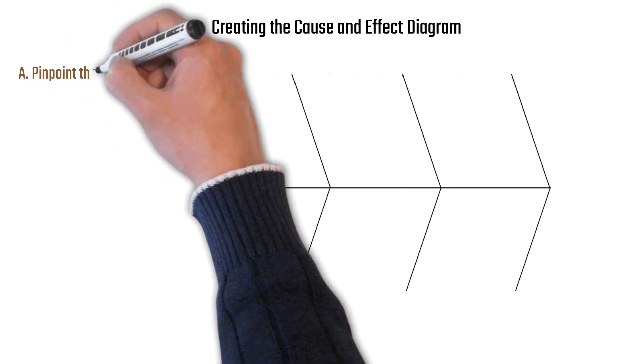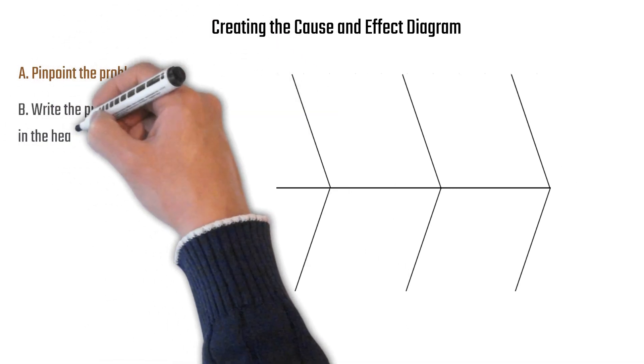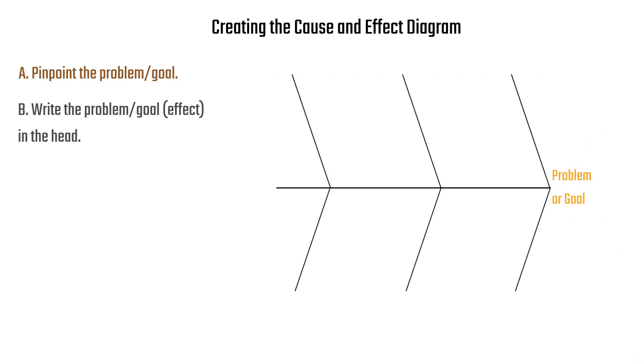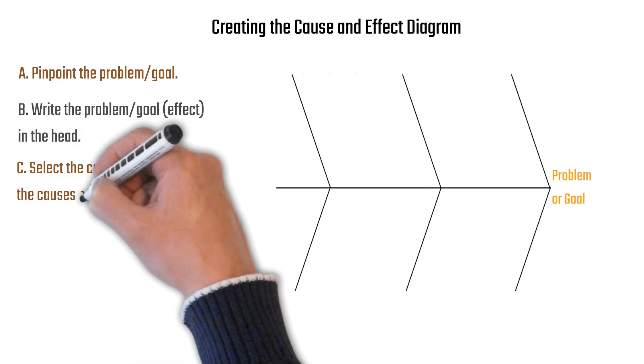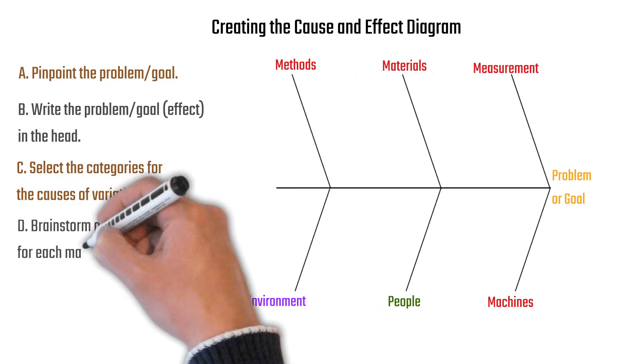So how do you create the cause and effect diagram? Well, you start by drawing the bone. You pinpoint the problem or goal and you're going to write it at the head of the fishbone. Then you can select the categories for the causes of variation. We'll just use measurements, materials, methods, environment, people, and machines.